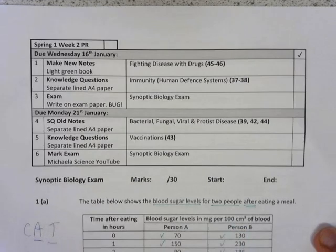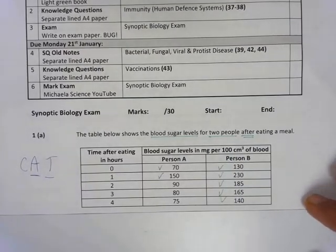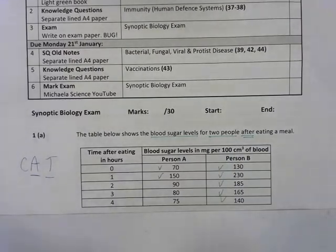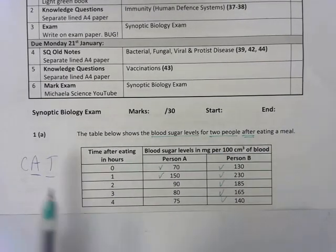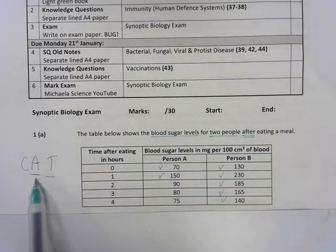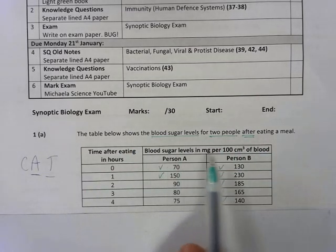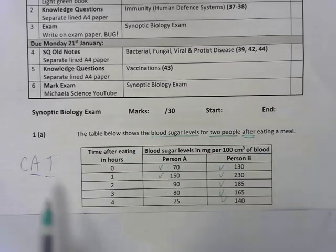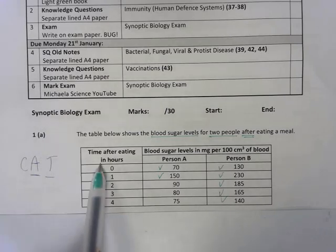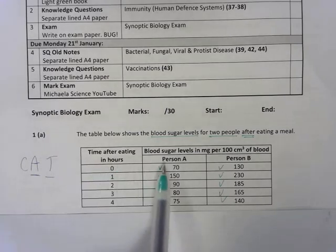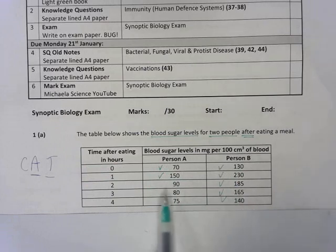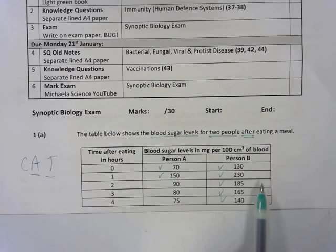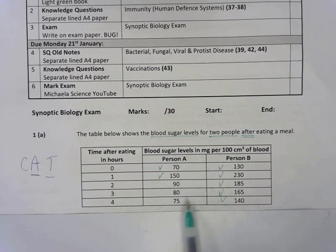We always CAT our tables or graphs, and I want you to write this down in your blue pen. C stands for Caption which we have read here, A stands for Axes which would be used on a graph but in our table represent the table headings, and we look at the trend. So after eating a meal, person A and person B's blood sugar levels are going up and then down again. However, it seems to be the case that person B's blood sugar level is always higher than person A's, so that's the trend I'm noticing.